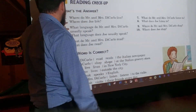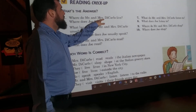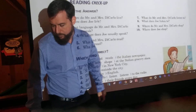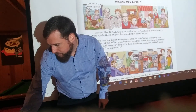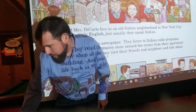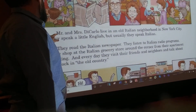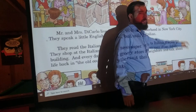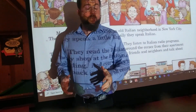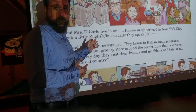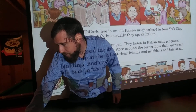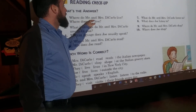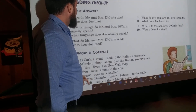So, for example, number one — on your paper, you're going to write number one. And then we'll go back here. Look at that first sentence: Mr. and Mrs. DiCarlo live in an old Italian neighborhood in New York City. So, you can write that — pretty much the same thing, word for word. On your notebook paper, write: Mr. and Mrs. DiCarlo live in an old Italian neighborhood in New York City.